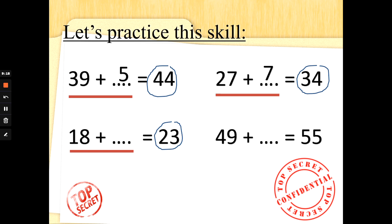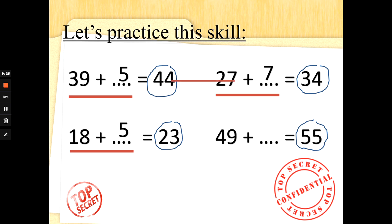What about 18 add something makes 23? We need 23 on both sides; we've only got 18. Count on: 19, 20, 21, 22, 23 — we needed 5 more to make that sum balance. What about 49 add something is 55? We've only got 49; count on: 50, 51, 52, 53, 54, 55 — 49 add 6 is 55. Well done!